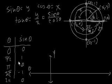When theta equals 0, sine of theta equals 0, so that's the point 0 comma 0. When theta is pi over 2, sine of theta equals 1. When theta equals pi, sine of theta is 0 again, so this is the point pi comma 0.